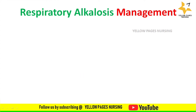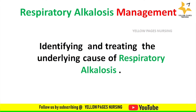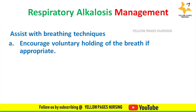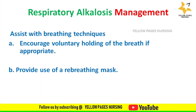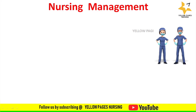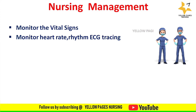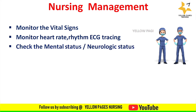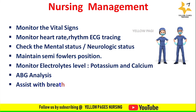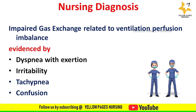Management of respiratory alkalosis is based on identifying and treating the underlying cause. Measures include assisting with breathing techniques, encouraging voluntary breath-holding if appropriate, providing use of a rebreathing mask, and providing carbon dioxide breaths as prescribed — such as rebreathing into a paper bag. Nursing management includes monitoring vital signs, heart rate, rhythm and ECG tracing, checking neurological status, maintaining semi-Fowler's position, monitoring electrolyte levels of potassium and calcium, ABG analysis, and assisting with breathing techniques. The nursing diagnosis is impaired gas exchange related to ventilation-perfusion imbalance, evidenced by dyspnea with exertion, irritability, tachypnea, and confusion.